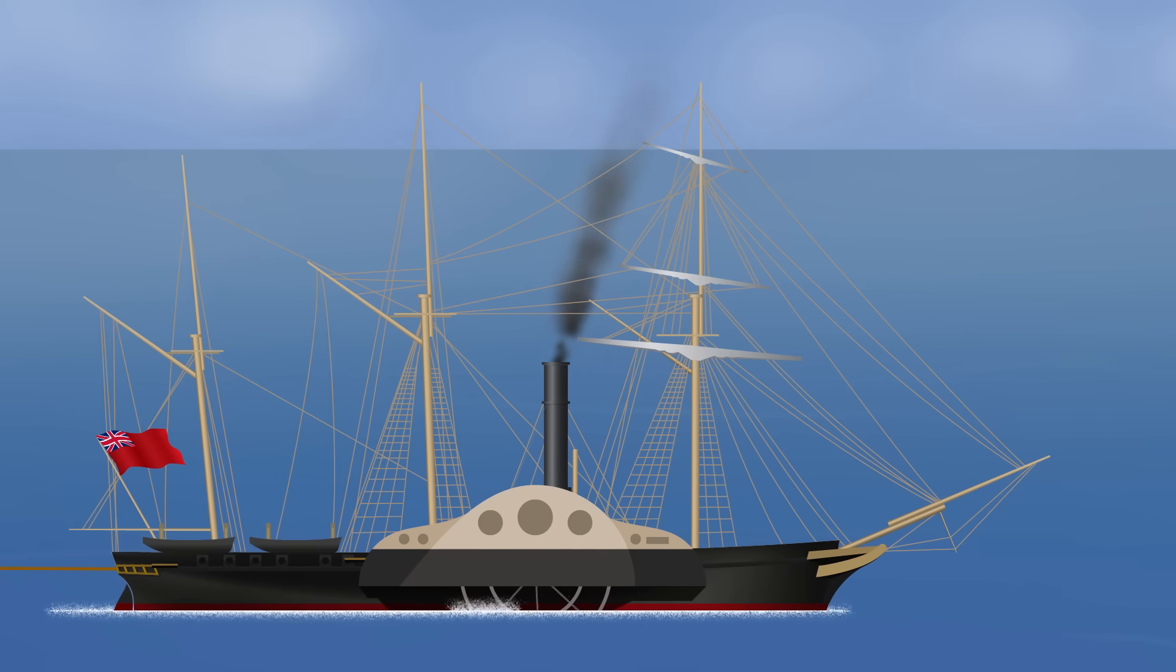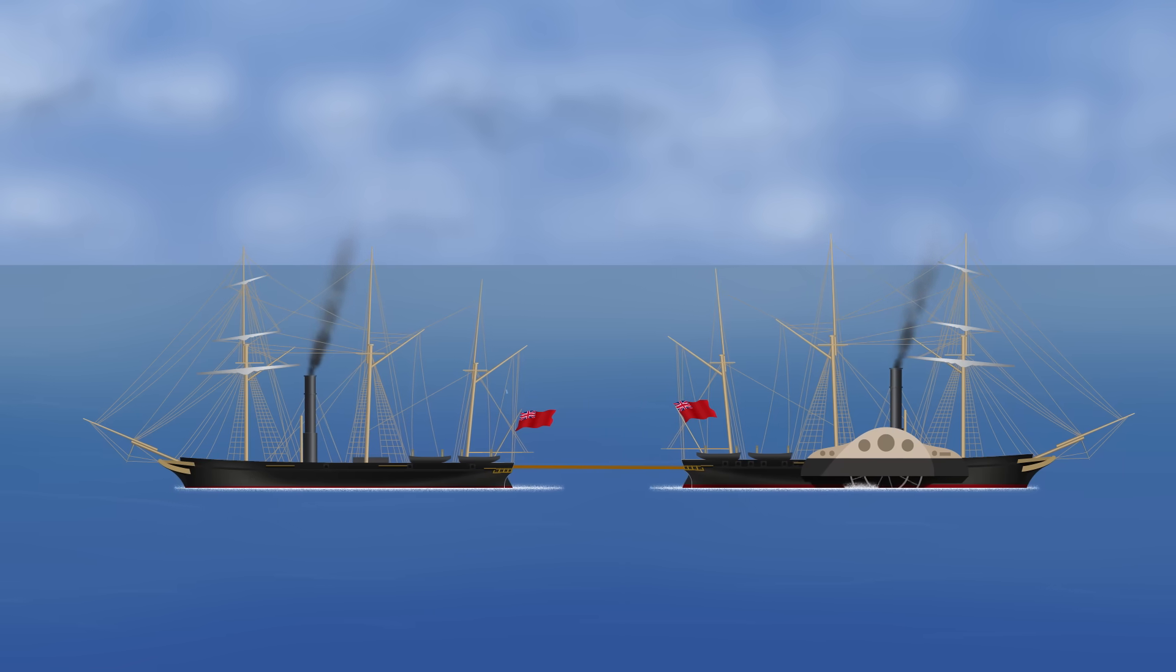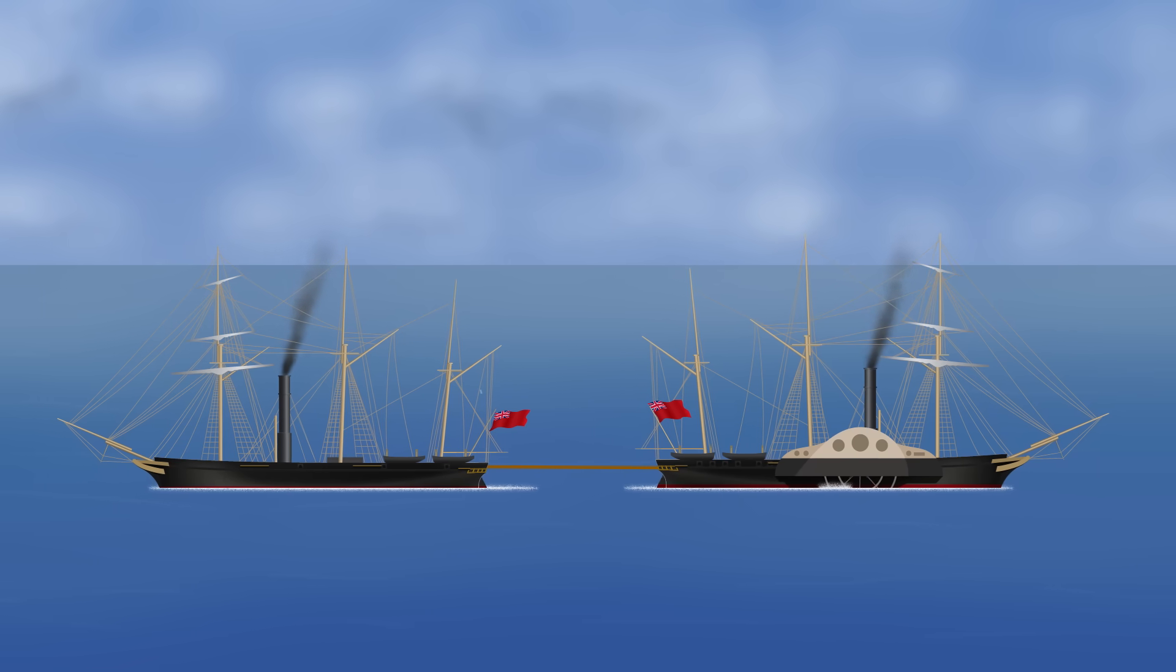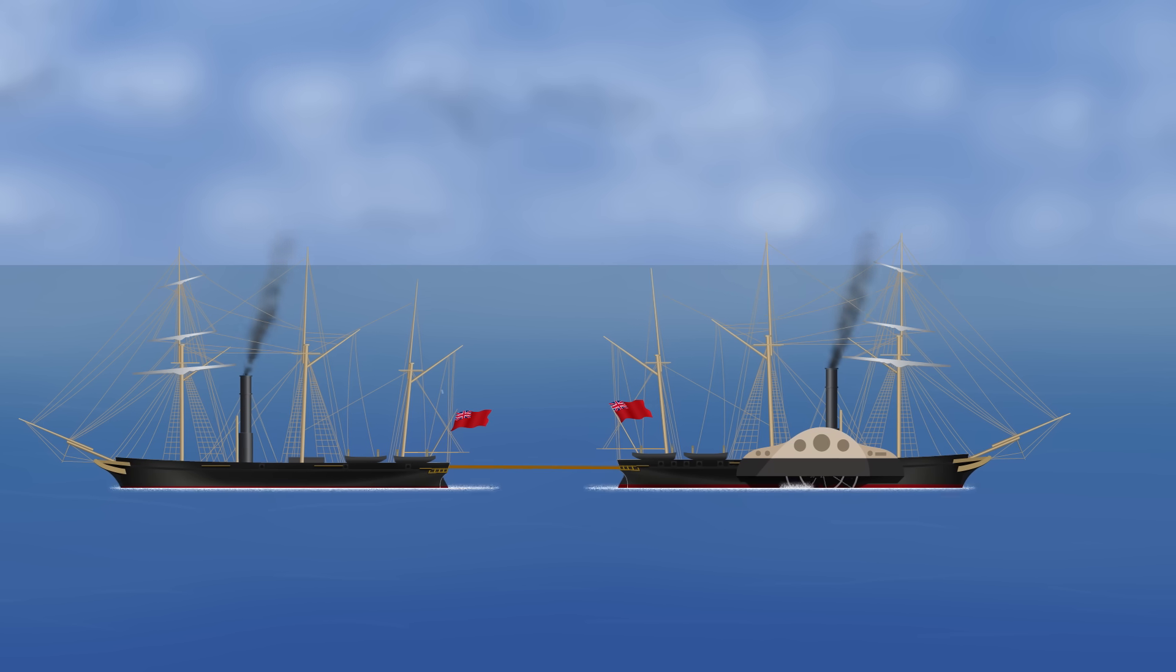This is why, in April 1845, an early design of screw propeller thrashed the existing paddle design in a famous tug-of-war between the warships HMS Rattler and HMS Alecto.